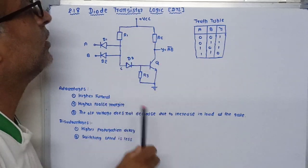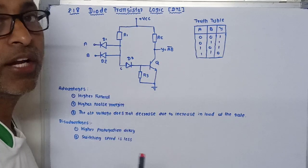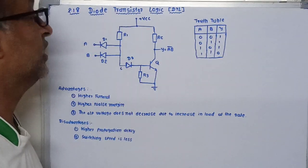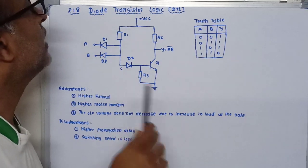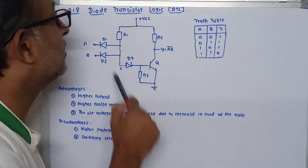Diode Transistor Logic, DTL. Diode and transistor are used in diode transistor logic. Here, a two-input diode transistor NAND gate circuit is shown.